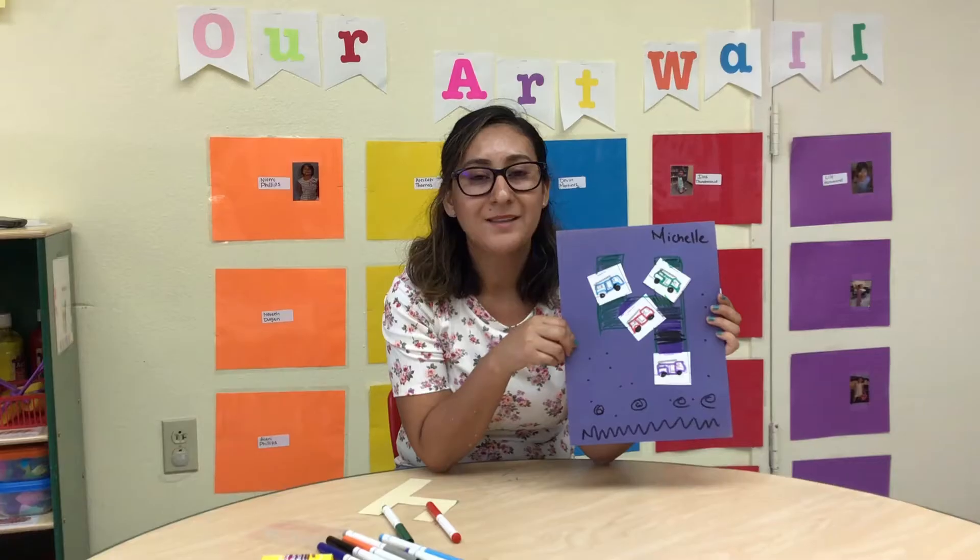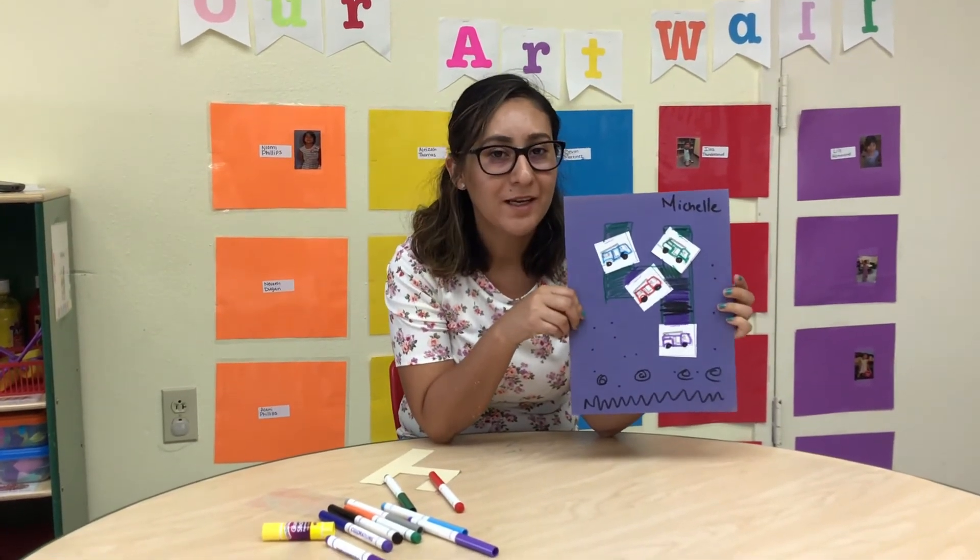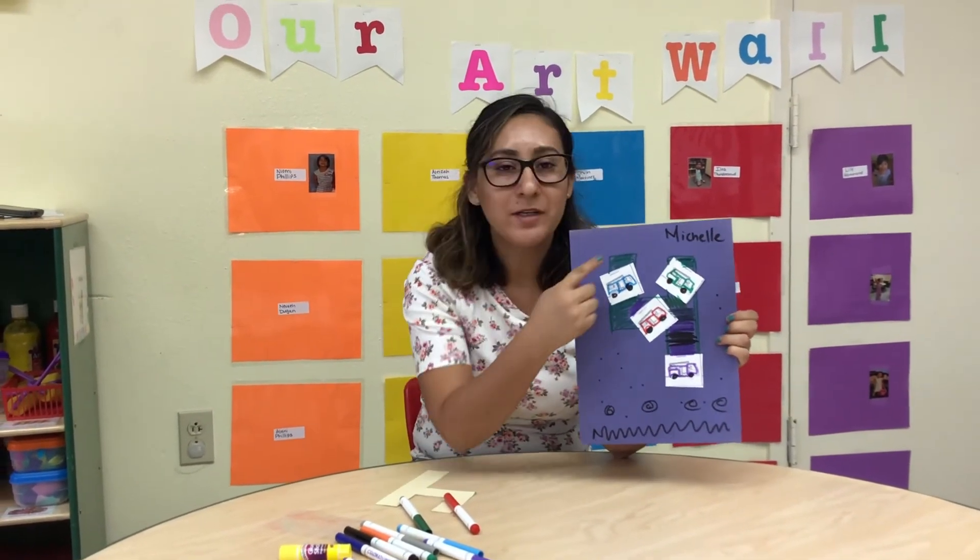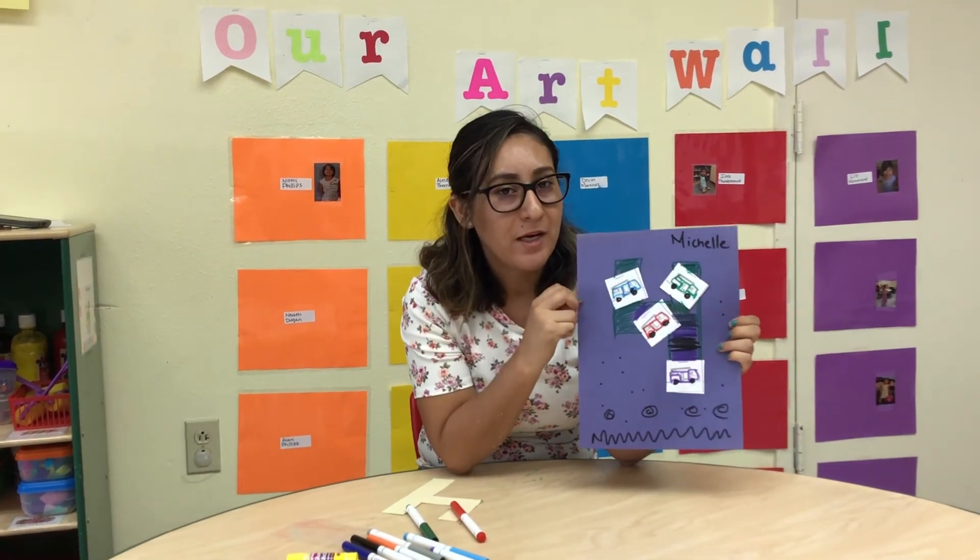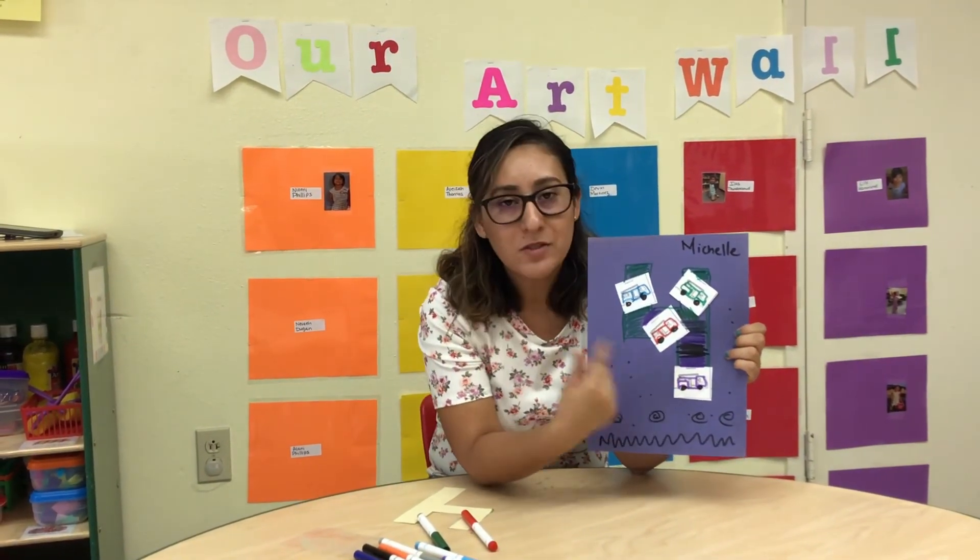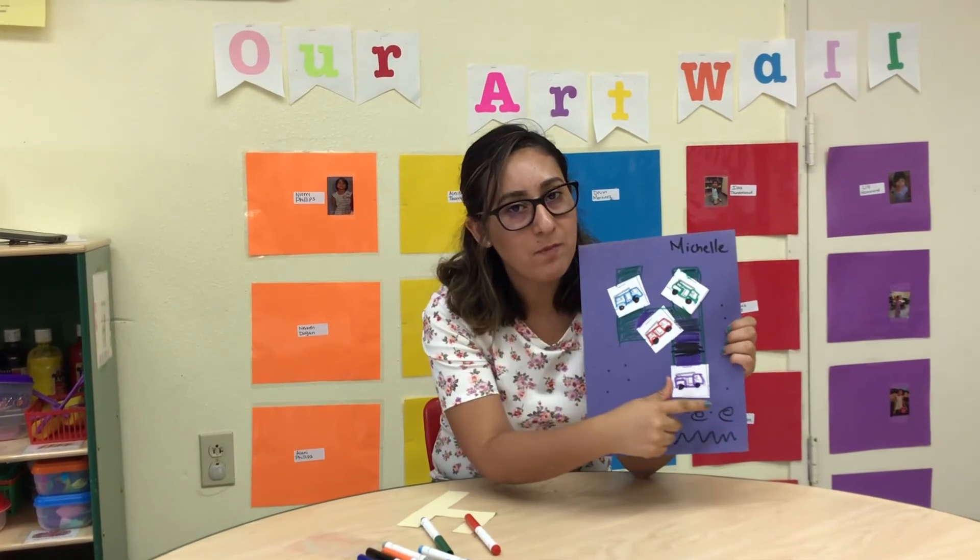And this was our small group project for today. And remember to write your name on the top of the paper. You can color number four and also you can decorate your construction paper.